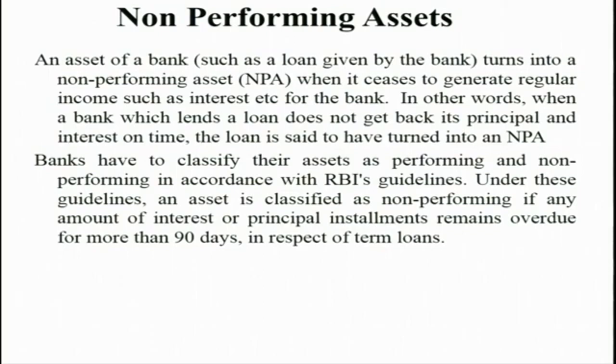One of the concerns with the Indian banking system recently is non-performing assets. An asset of a bank turns into a non-performing asset when it ceases to generate regular income such as interest for the bank. Banks have to classify their assets as performing and non-performing assets in accordance with RBI guidelines. Recently there has been lots of discussion with regard to non-performing assets in India, and the RBI has come up with lots of guidelines regarding NPA classification. In this session, our discussion was confined to the banking structure in India — commercial banks, cooperative banks, regional rural banks, development banks, and non-banking financial companies.